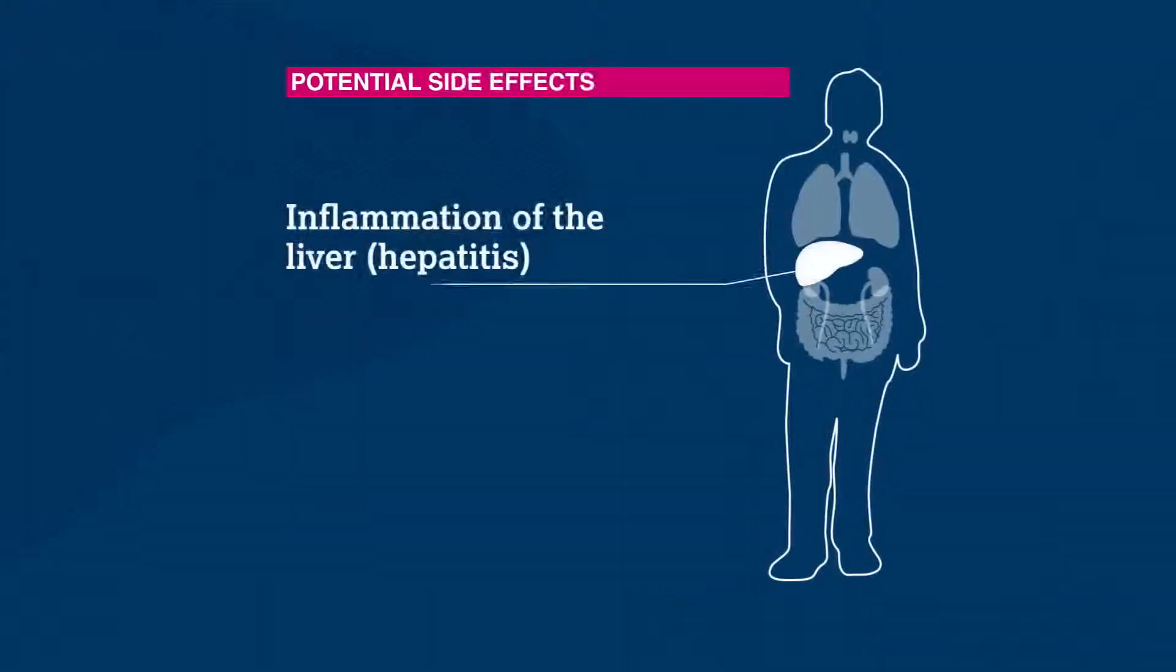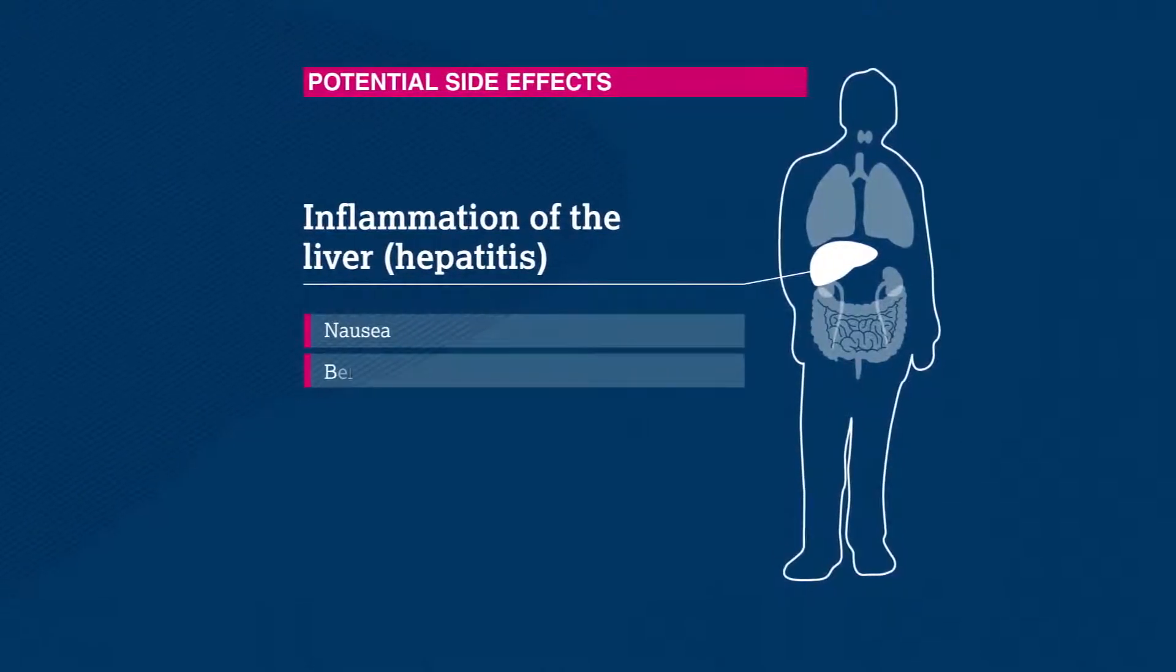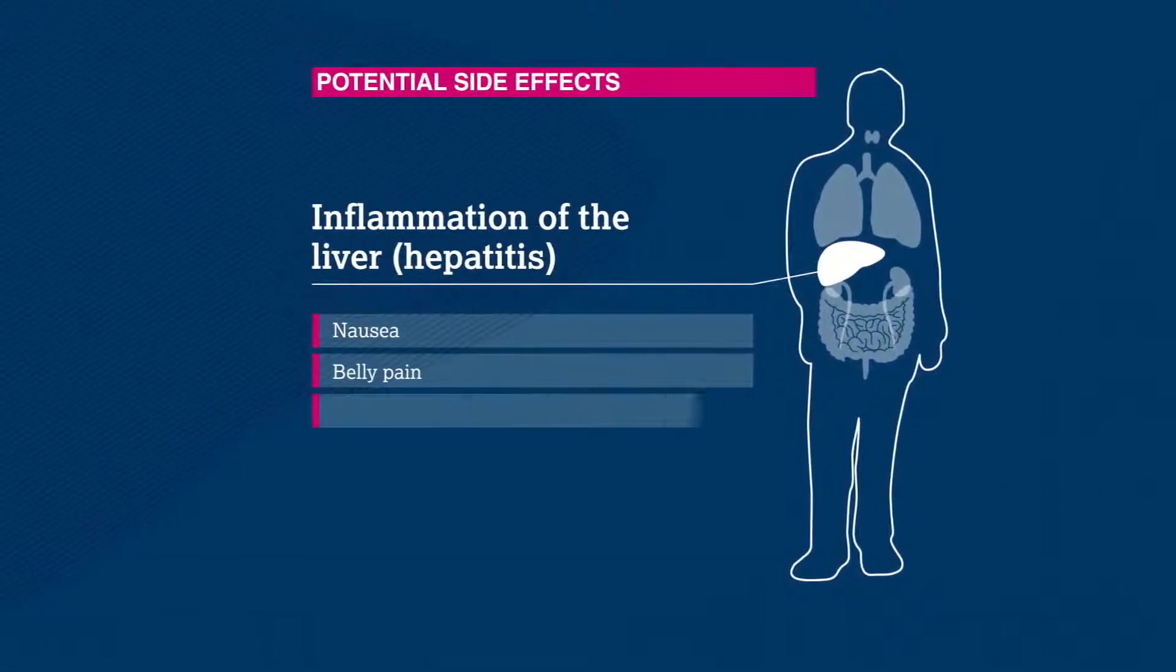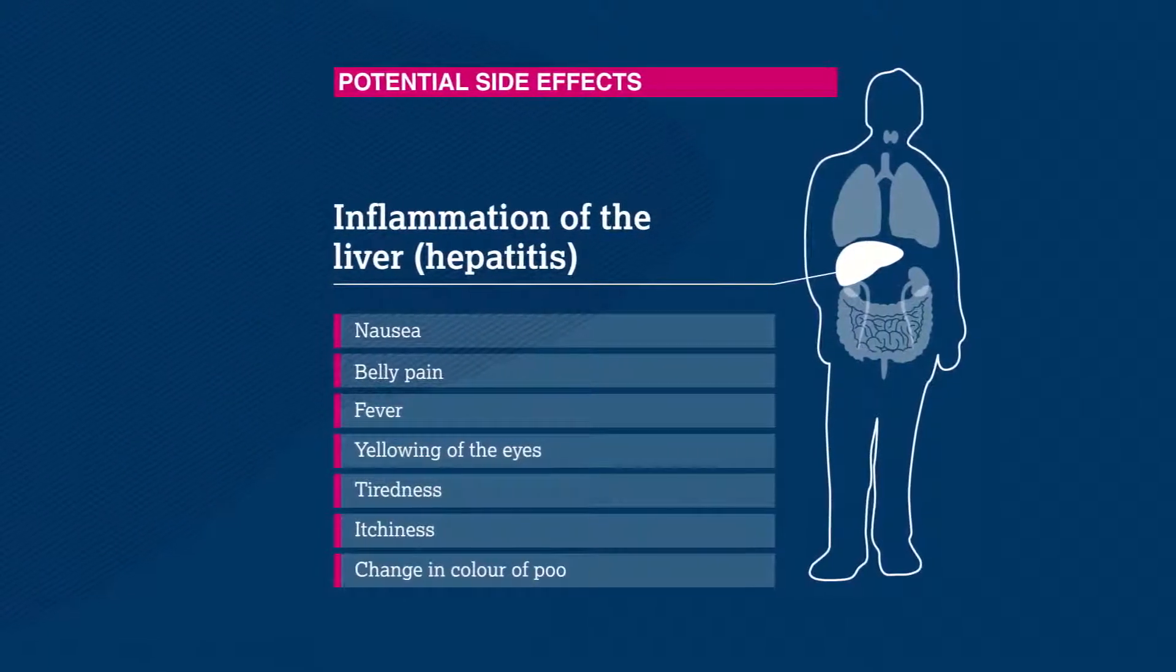The liver may also be affected, making patients feel like throwing up or causing belly pain. This can also cause fever, yellowing of the eyes, and a few of the other symptoms we've mentioned.